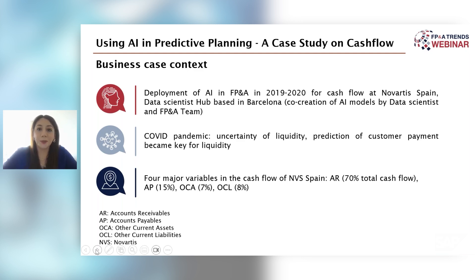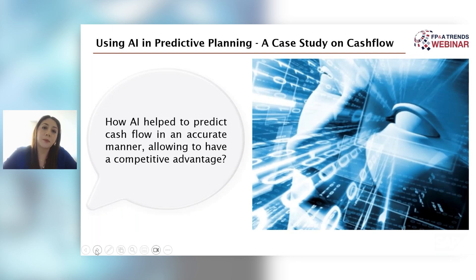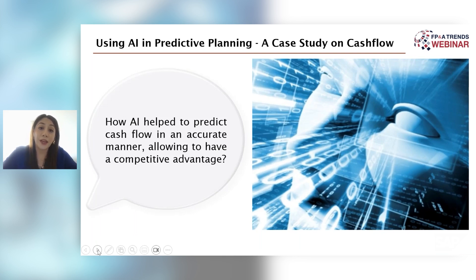I think the main point of this practical business case is to answer the question: how can AI — and in this case, machine learning — accurately predict cash flow, and how can this actually allow you to create a competitive advantage for your company or the affiliate you're working for?